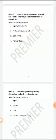In a coin tossing example we have only two possible outcomes: a head or tail. This is an example of equally likely event, mutually exclusive event, both of these. The correct answer is both of these.